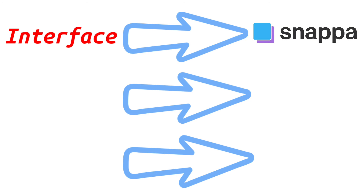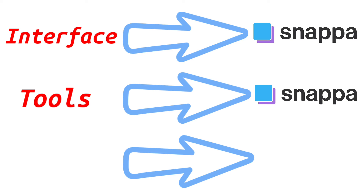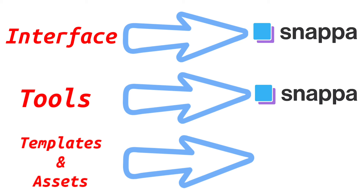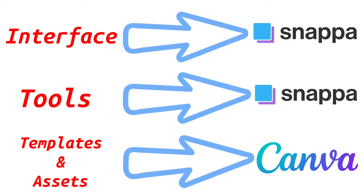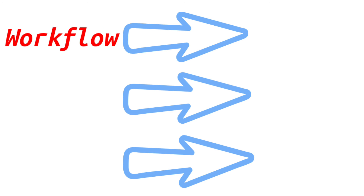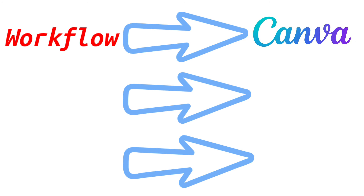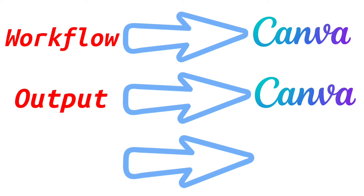To complete this Canva versus Snappa comparison: for the interface, the winner is Snappa — its interface is cleaner and less intimidating for non-designers. For the tools, the winner is Snappa — you will spend far less time searching for the right tools within Snappa than in Canva. For templates and assets, the winner is Canva — with thousands of templates and millions of photographs, Canva has the greatest variety. For workflow, the winner is Canva — simple enough to understand and easy to use when collaborating with teams. For output, the winner is Canva — the professional version can export various design formats ranging from images to videos.